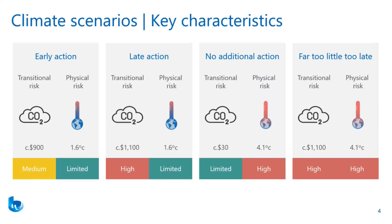The third of the core scenarios is the no additional action scenario, whereby there isn't much change to policy compared to what we currently have, resulting in a relatively low and largely ineffective carbon tax. The impact of that is a high degree of warming by the end of the century — as high as 4.1 degrees above pre-industrial levels. Under a 4.1 degree world, you're looking at systematic changes to the world environment, including rising sea levels and more frequent and more severe catastrophic climate events.